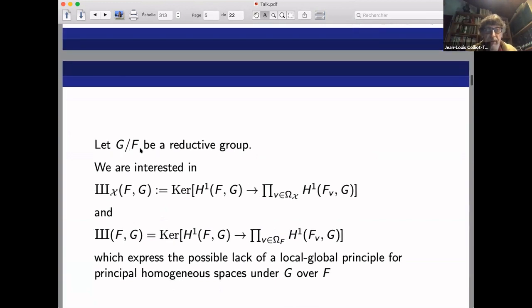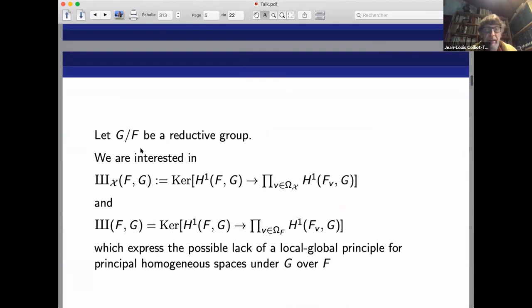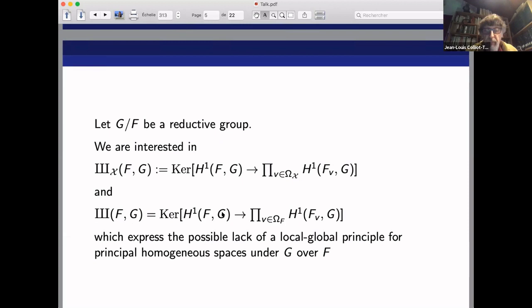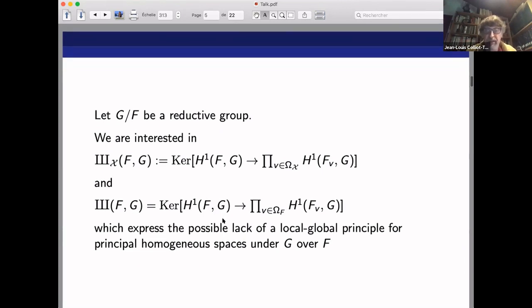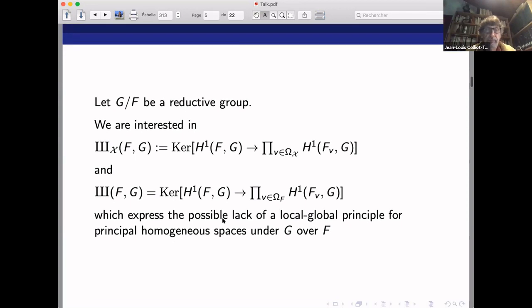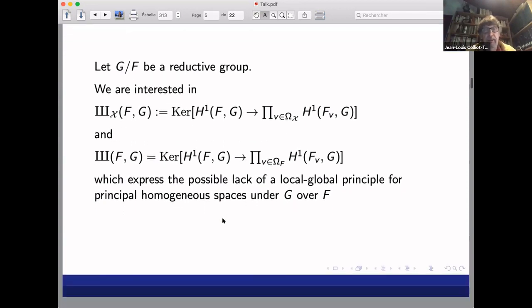Now we look at a reductive group over the field F, over the semi-global field F. And we're interested in what we denote by SHA curly X of F, G, the set of principal homogeneous spaces under G, up to isomorphism, which locally at all the completions corresponding to points of codimension one on X are trivial. And then we have SHA of F, G which is the same except that you look at all the possible discrete valuation rings of geometric origin. That kernel expresses a possible lack of a local-global principle for principal homogeneous spaces under G over F.